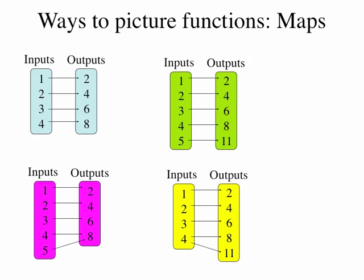Last, here's the mapping diagram for the last table. In this case, we input 4 twice — 4 only shows up once in our list of possible inputs. But we show that the first time we put it in, it mapped to an output of 8, and the second time it mapped to an output of 11. We can tell from this that this last relation is not a function, because the input of 4 has two different outputs.